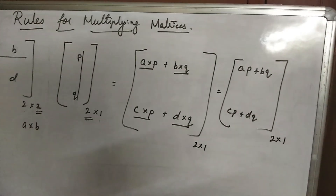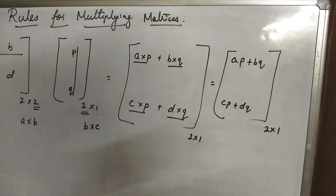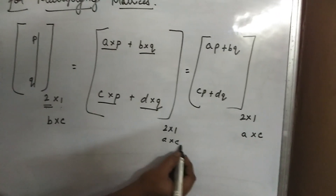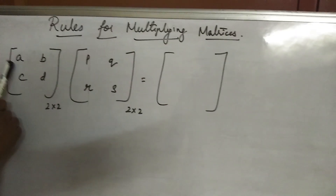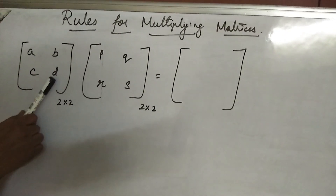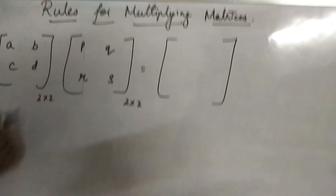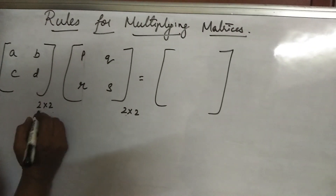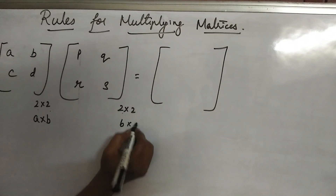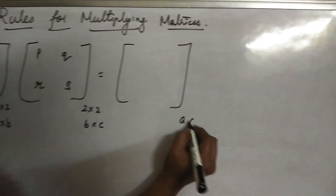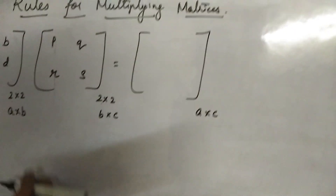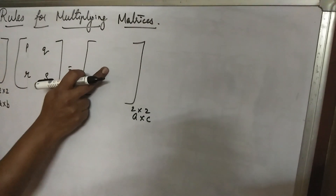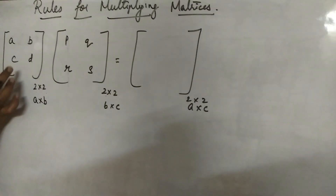So this confirms A by B multiplied by B by C gives A by C. Now, the first matrix has elements A, B, C, D and the second one has P, Q, R, S. Here both are 2 by 2. So A by B is 2 by 2 and B by C is 2 by 2, meaning the answer will also be 2 by 2. Now multiply.